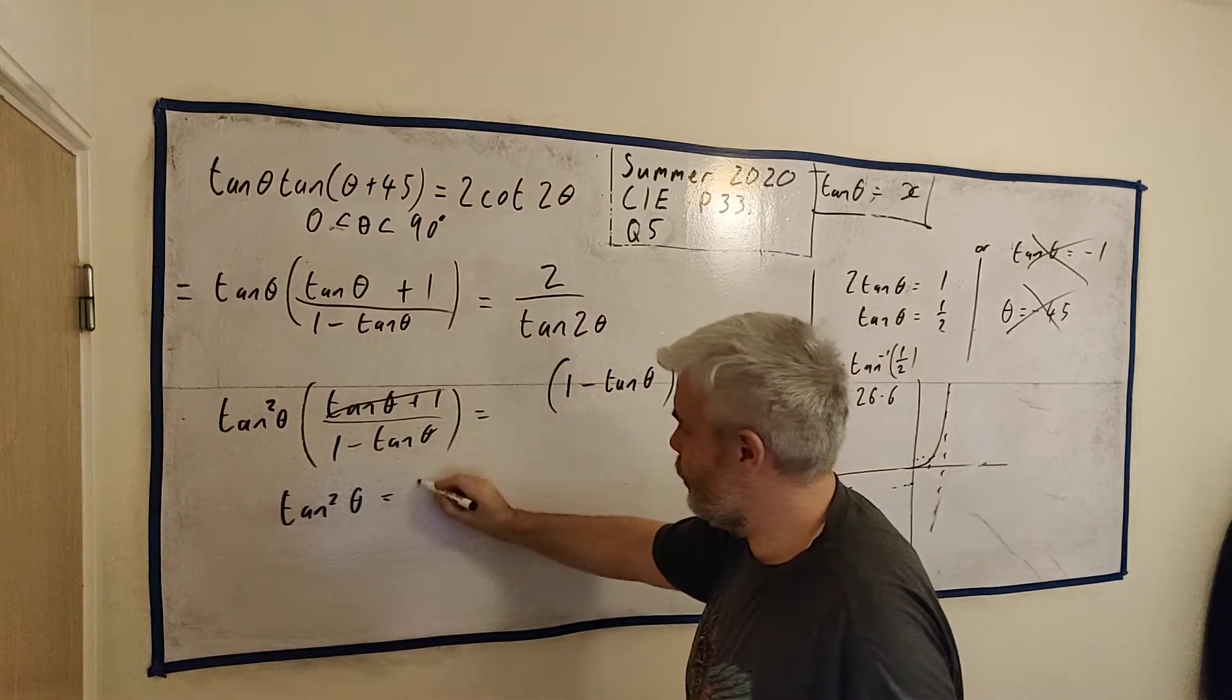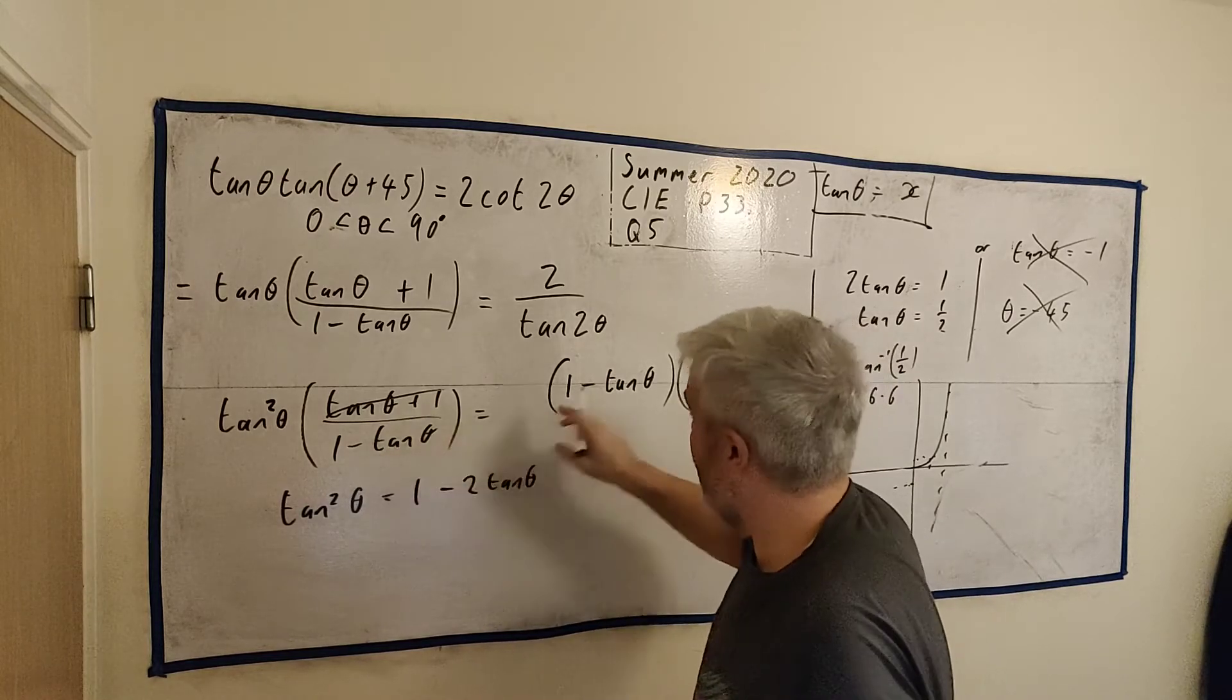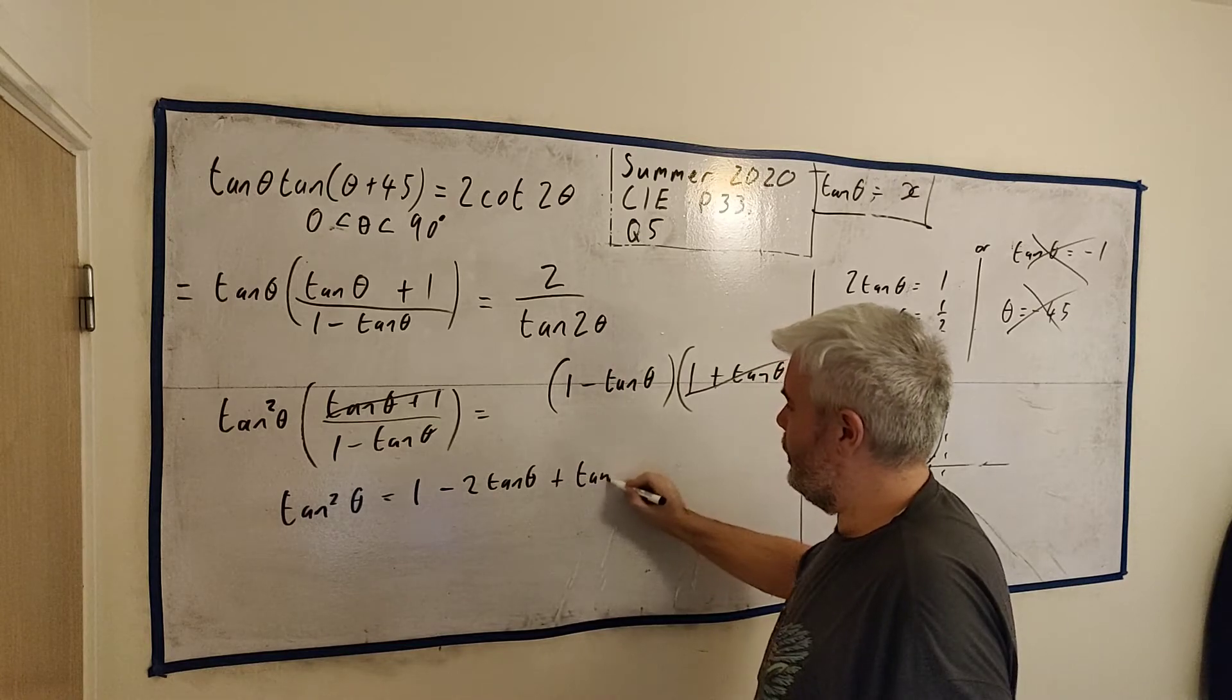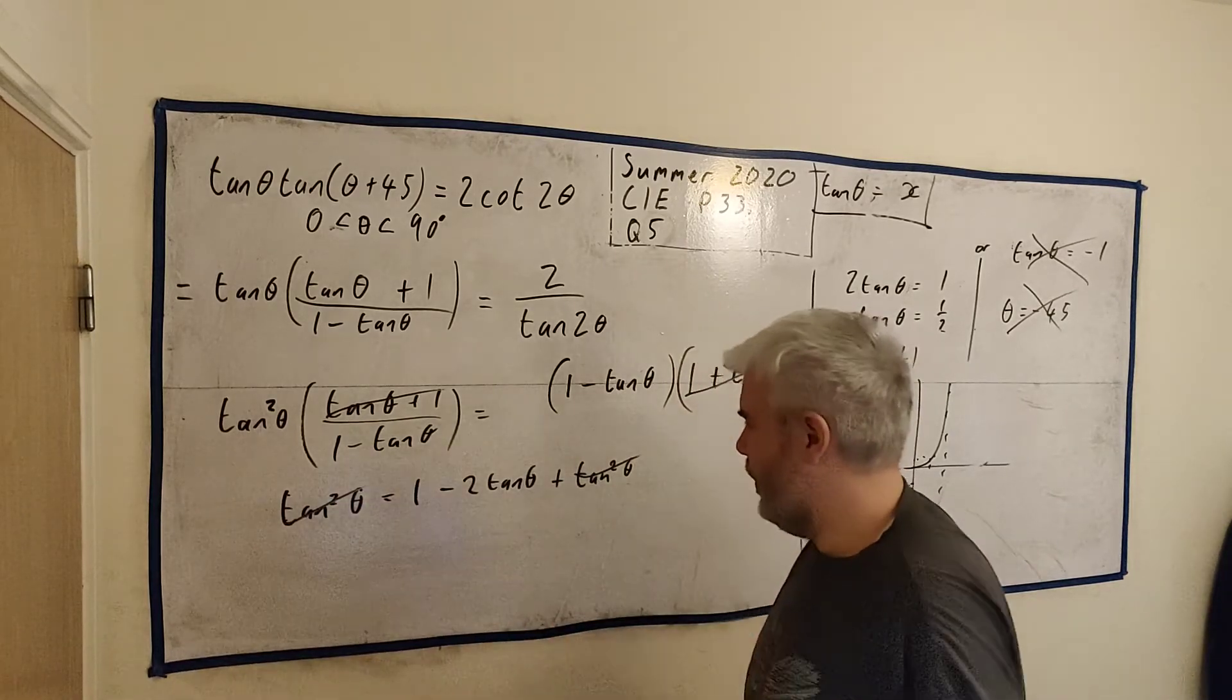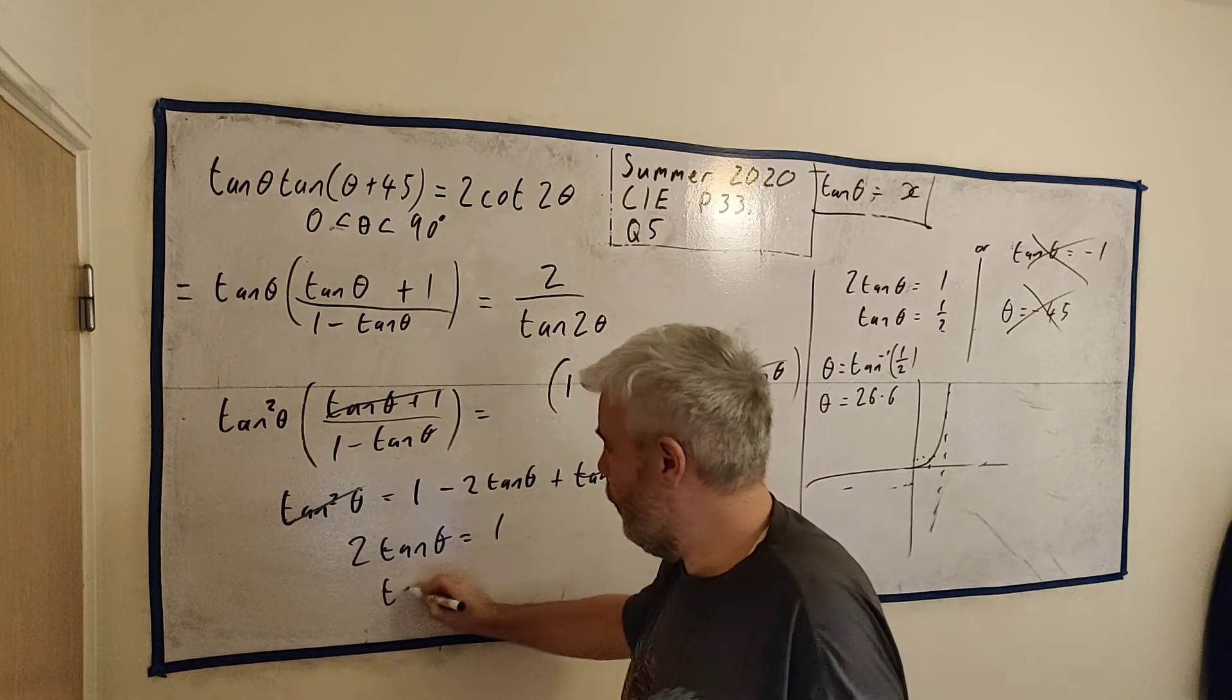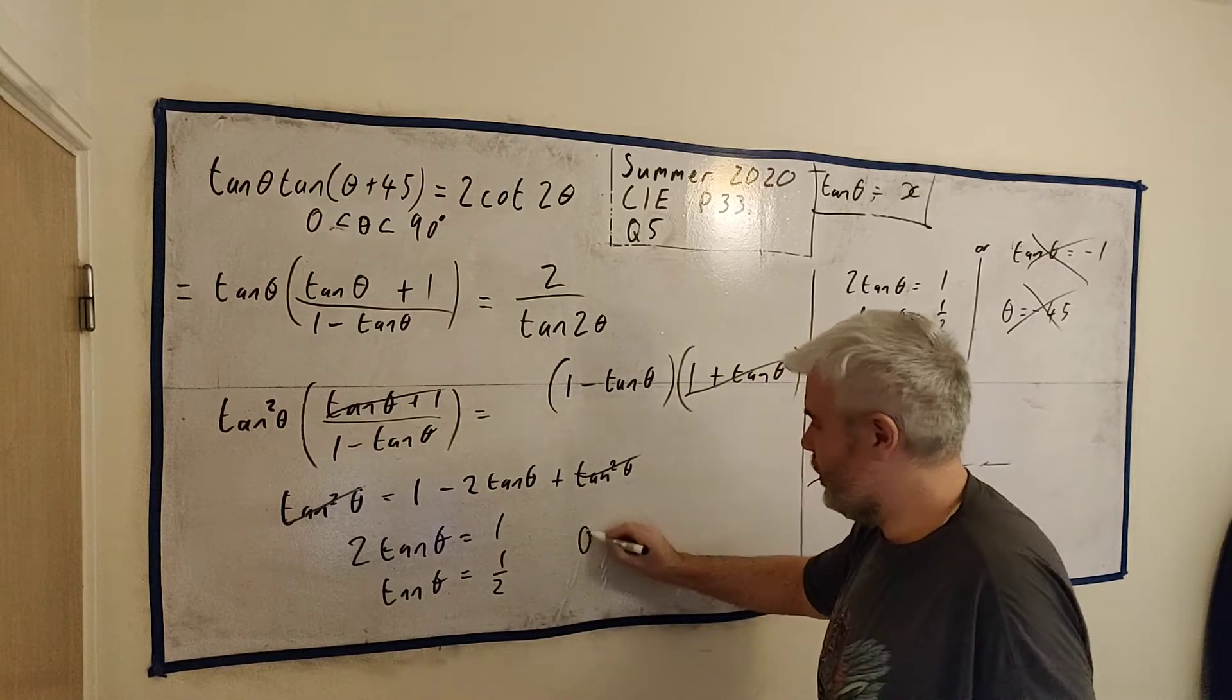well this squared which is 1 minus 2 tan θ I'm just multiplying these two and plus minus by minus plus plus tan² θ well tan² cancels with tan² leaves zero over there now let's bring this over we get 2 tan θ is equal 1 we get tan θ is equal a half we solve for this we get θ is equal 26.6 same answer and just there's no quadratic